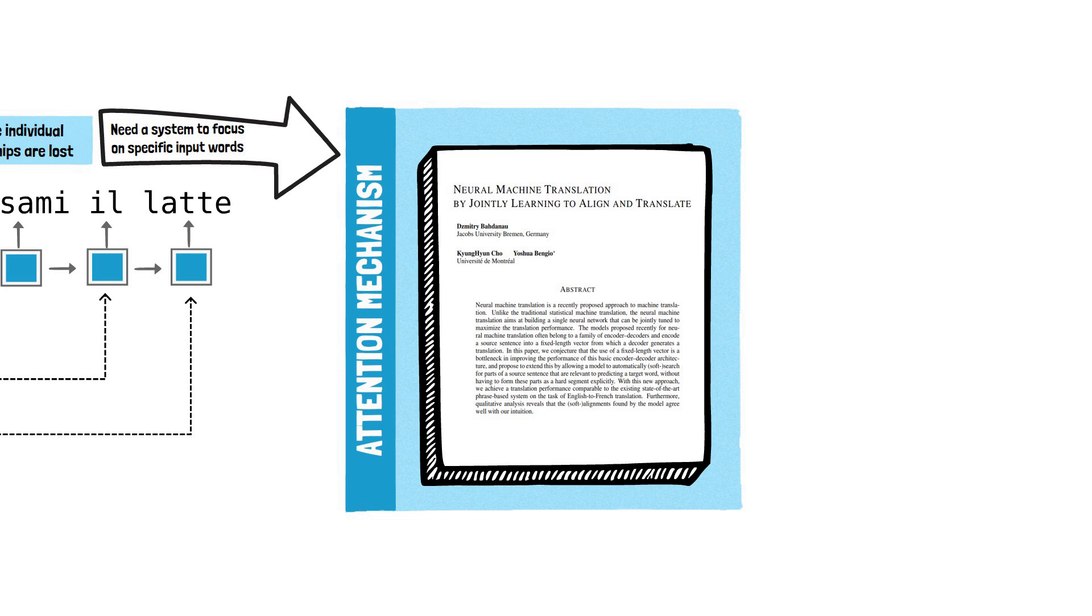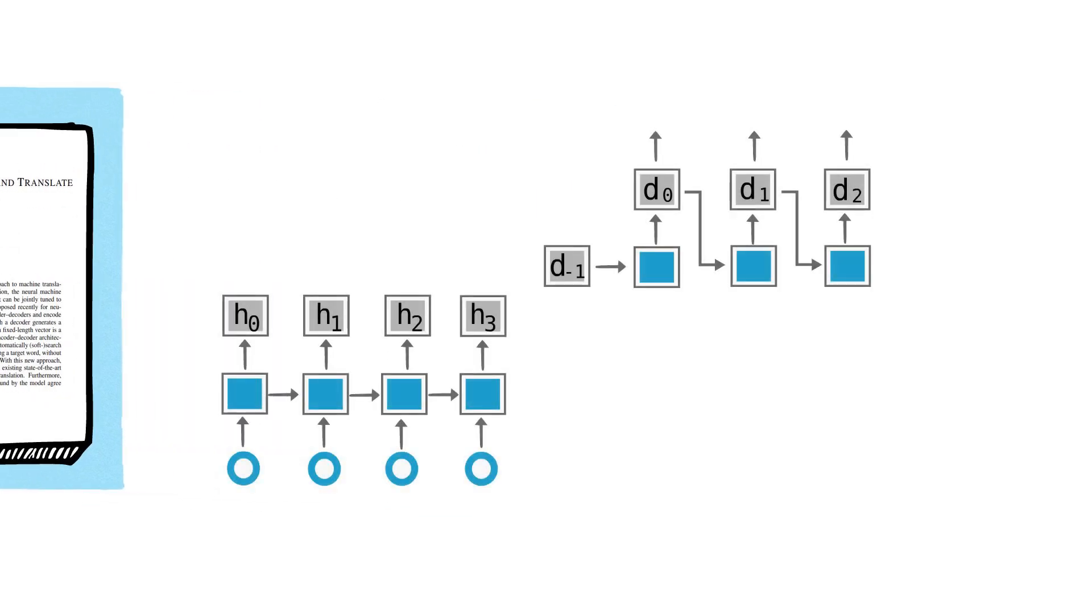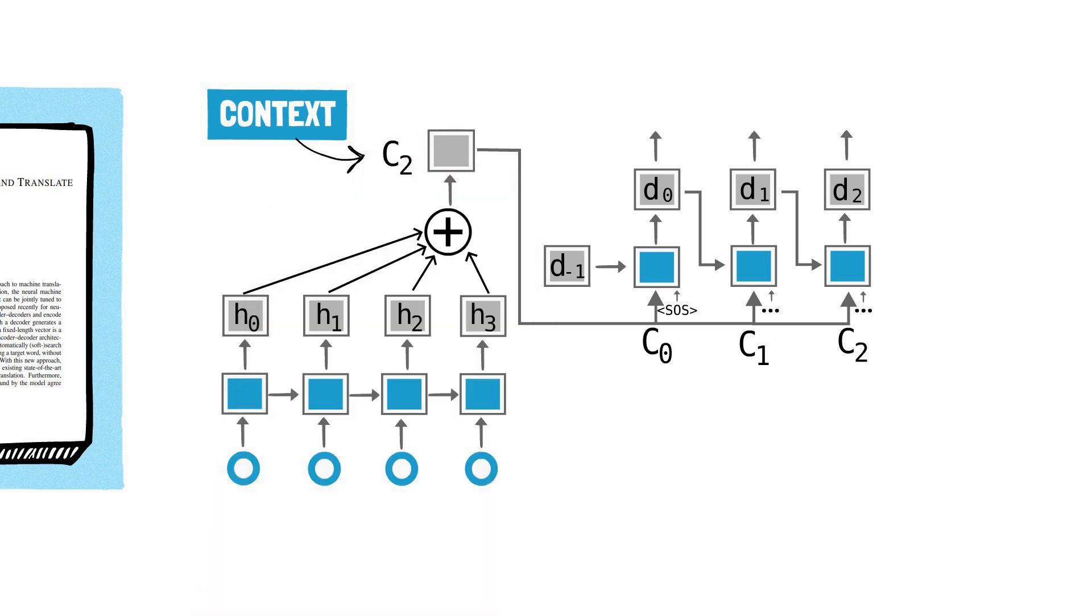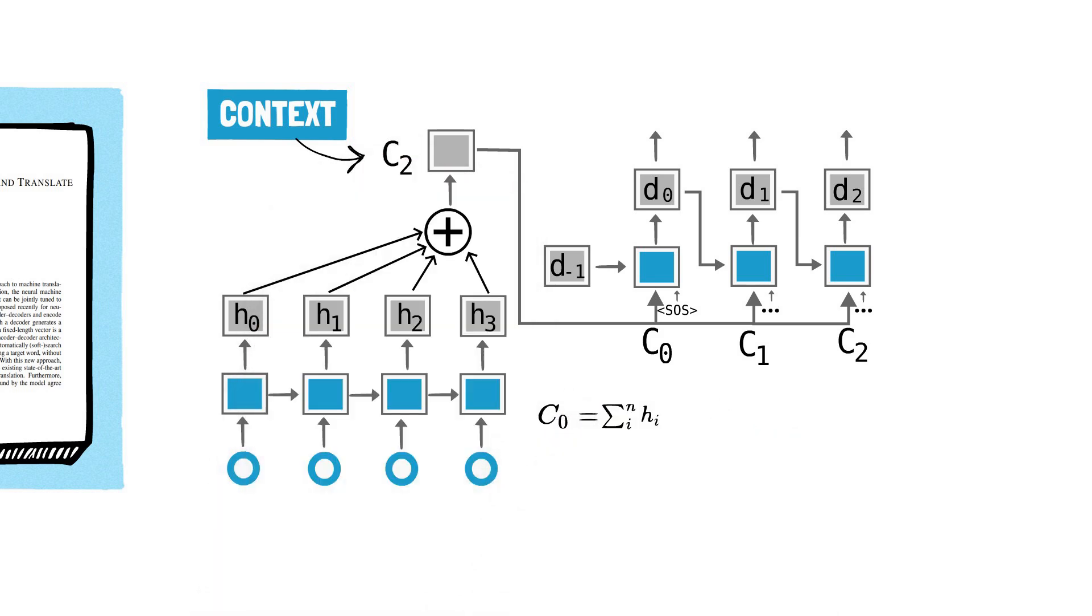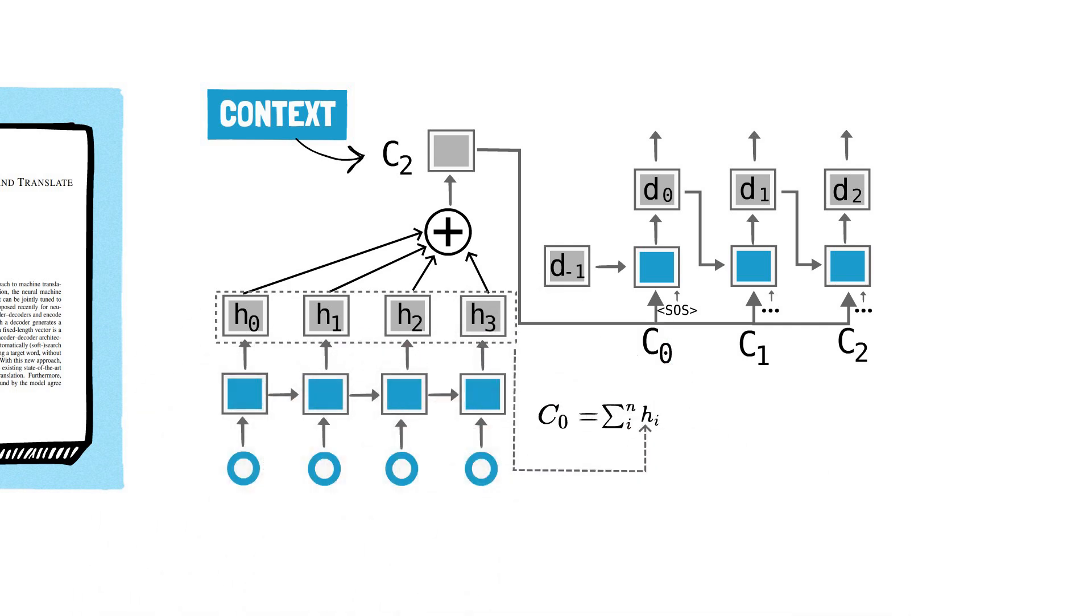Instead of discarding the encoder outputs at each step the idea is to carry this information to each decoder input in the form of a context. The context is a dynamic weighted combination of all encoder states allowing the decoder to pay attention to specific parts of the input sentence.